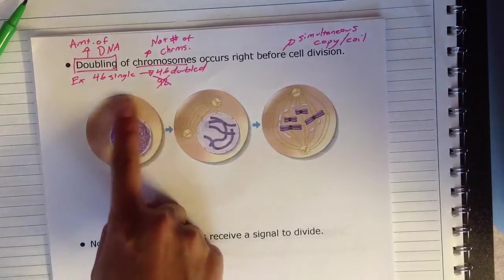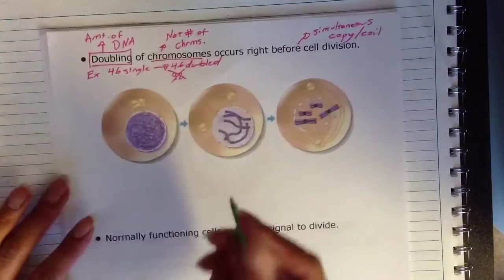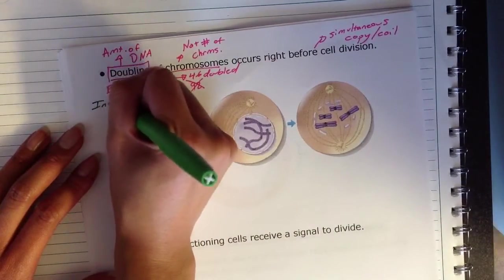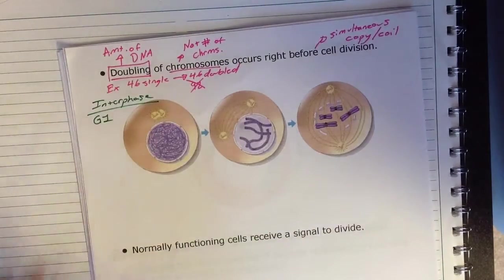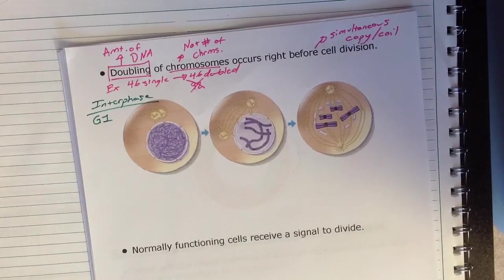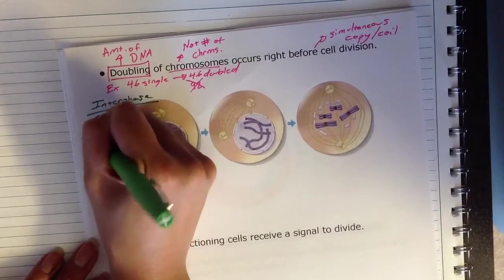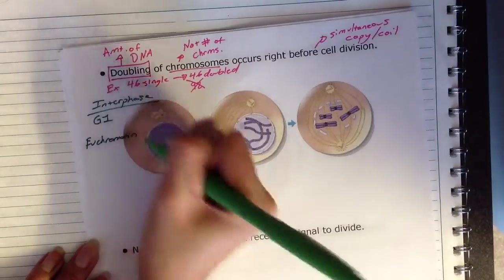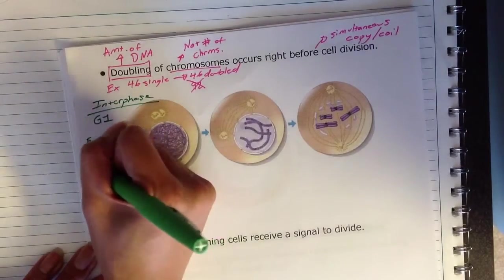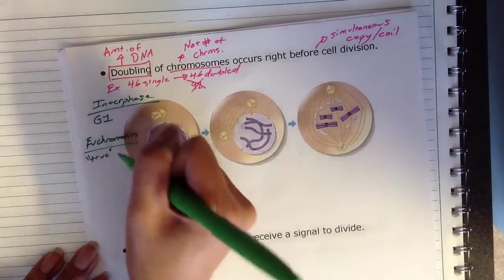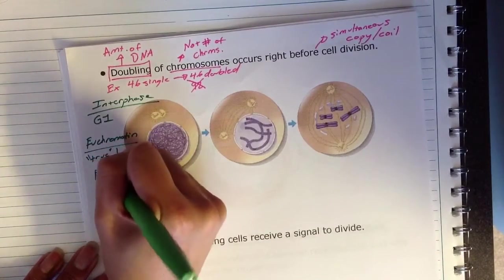So a couple of things that you'll see happening. First, you have your initial cell. And this cell is going to be in a phase known as interphase, and specifically the G1 portion of interphase. In the G1 phase of interphase, a cell is going to have what's known as euchromatin. And remember, eu just means true. So we're talking about true chromatin or true DNA. And chromatin is just going to be your relaxed DNA.